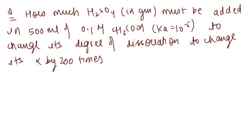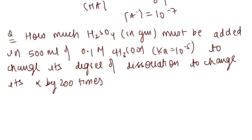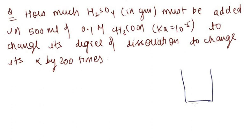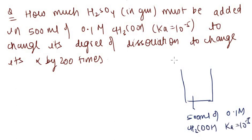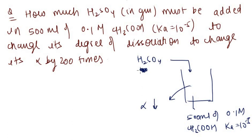Example 3: How much H₂SO₄ in grams must be added to 500 mL of 0.1 M acetic acid (Ka = 10⁻⁵) so that the degree of dissociation alpha reduces by 200 times due to the common ion effect? Pause the video and try by yourself. Let the concentration of H₂SO₄ added be C molar.